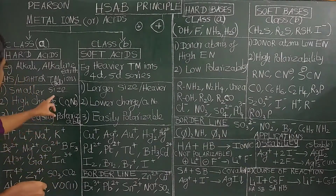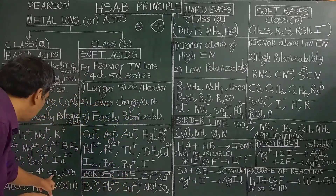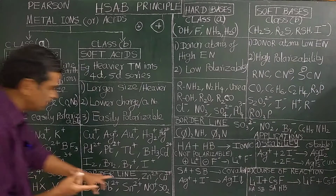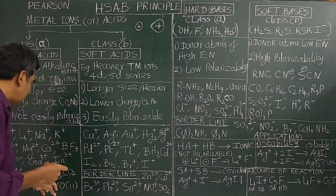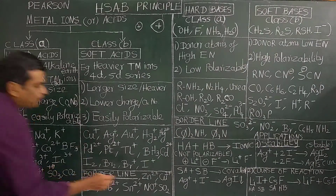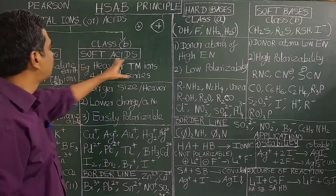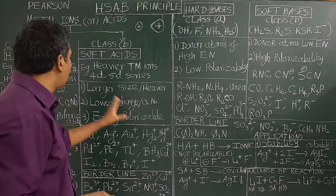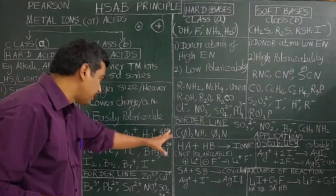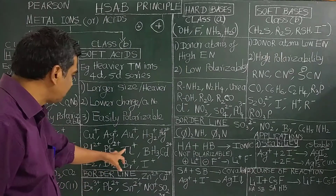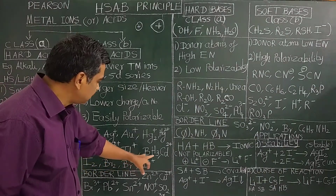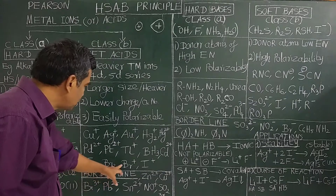SO3 has a highly oxidized sulfur. Examples of soft acids include: lower oxidation number metals — mercury, palladium 2+, thallium+, platinum 2+, platinum 4+, BH3, cadmium 2+, halogens such as Br2, Br+, and I2.